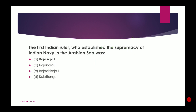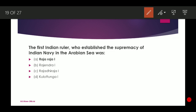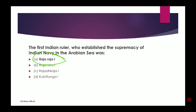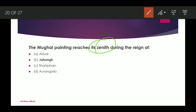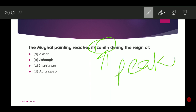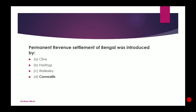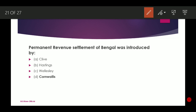The first Indian ruler who established the supremacy of Indian navy in the Arabian Sea was Raja Raja I — that is the correct option. Next: Mughal painting reached its zenith — meaning its peak — during the reign of Jahangir, who was Akbar's son. Next: The permanent revenue settlement of Bengal was introduced by Lord Cornwallis.